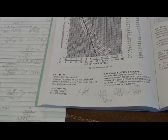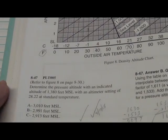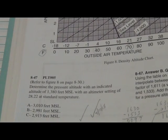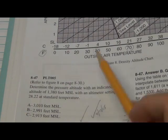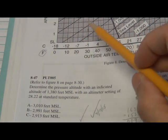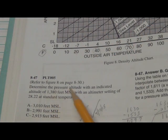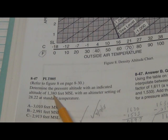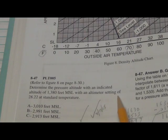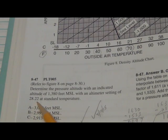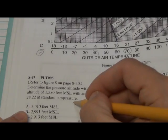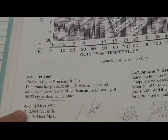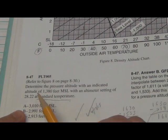Here's the question. It says, determine the pressure altitude, right? We're going to find this diagonal line here. Determine the pressure altitude, and they give you indicated altitude of 1380 feet. That means your plane is sitting at 1380 feet of elevation. And the altimeter setting is at 28.22, and it's at standard temperature. So let's find the pressure altitude.